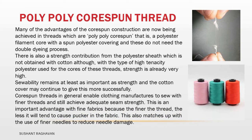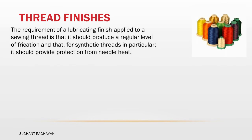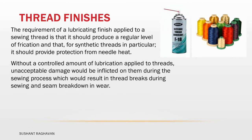Core spun threads in general enable clothing manufacturers to sew with finer threads and still achieve adequate seam strength. This is an important advantage with fine fabrics, because the finer the thread the less it will tend to cause pucker in the fabric. This also matches up with the use of finer needles to reduce needle damage. The requirement of a lubricating finish applied to a sewing thread is that it should produce a regular level of friction, and that for synthetic threads in particular it should provide protection from needle heat. Without a controlled amount of lubrication applied to threads, unacceptable damage would be inflicted on them during the sewing process, which would result in thread breaks during sewing and seam breakdown in wear.